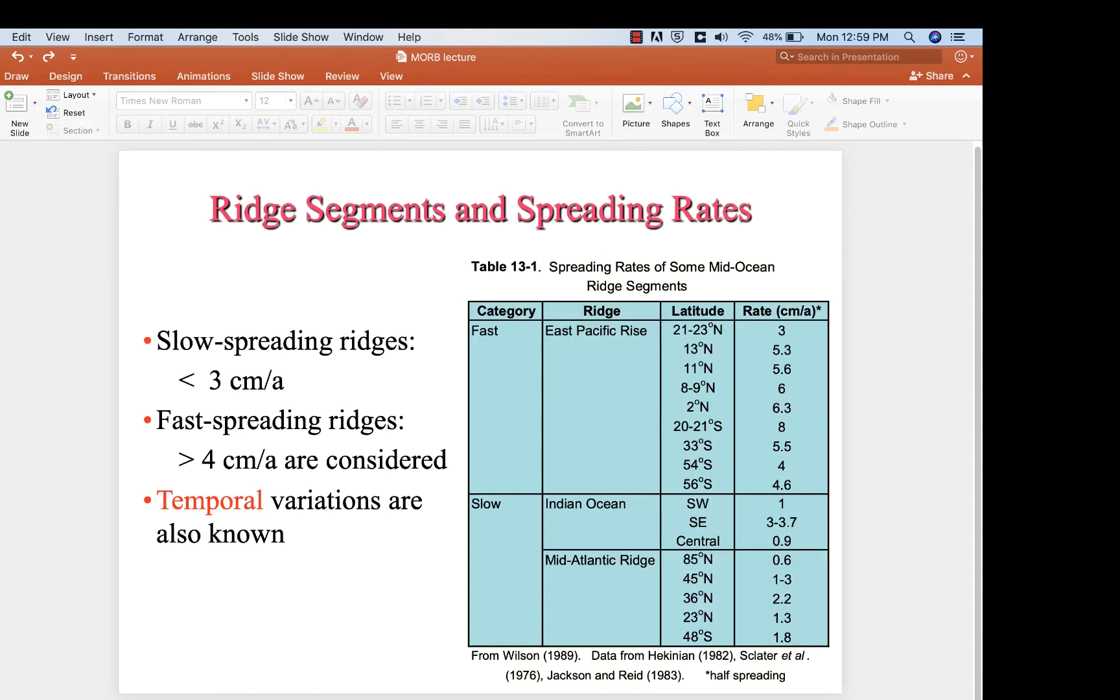Here are what spreading rates look like. It's not too important to know the precise numbers, but just in terms of ballpark, they range from a little bit less than a centimeter per year. Here's 0.6 at the northern edge of the Mid-Atlantic Ridge, up to about 6 centimeters per year would be part of the East Pacific rise that we saw in those longer yellow vectors in the Pacific.